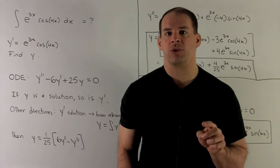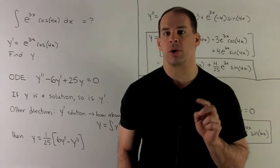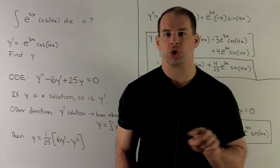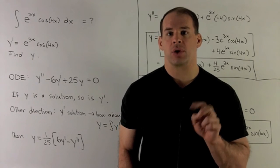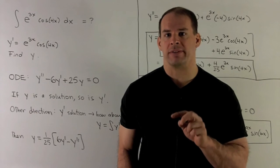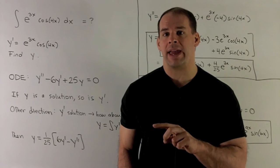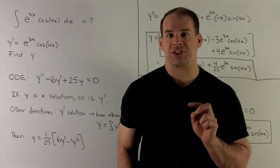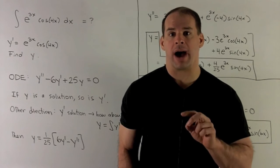So remember, if I want the antiderivative of e to the 3x cosine 4x, I'm going to treat e to the 3x cosine 4x as a derivative of some function y. The problem is asking us to find that y.